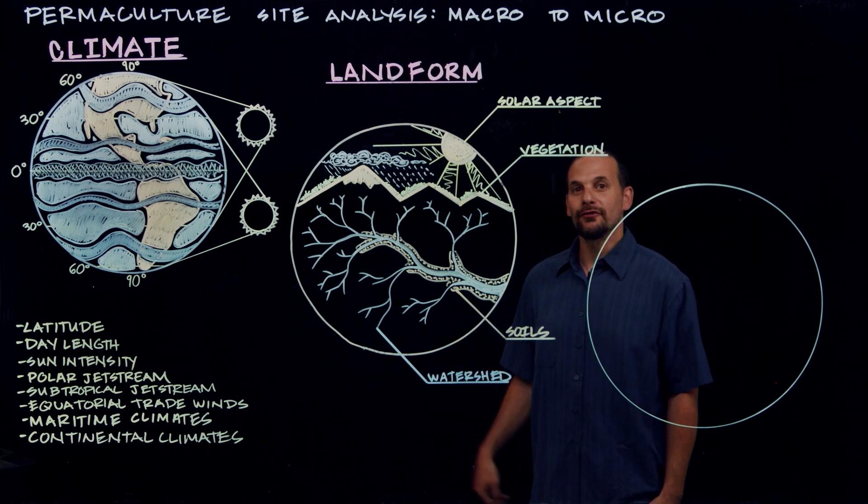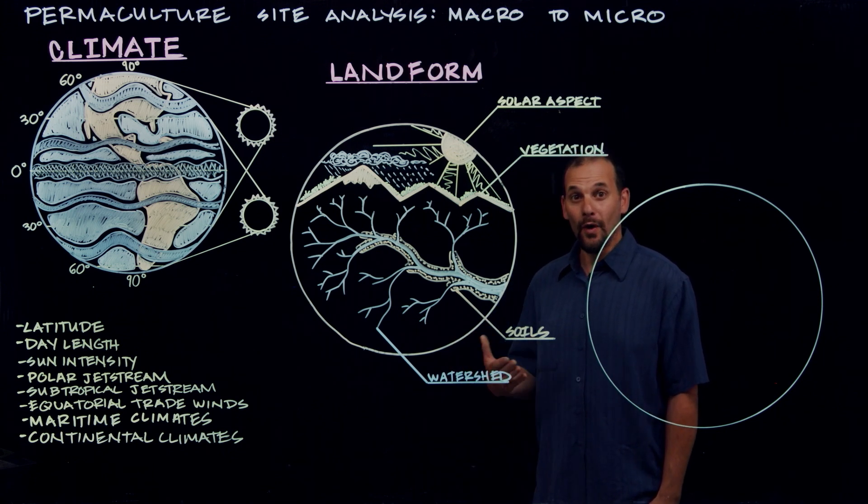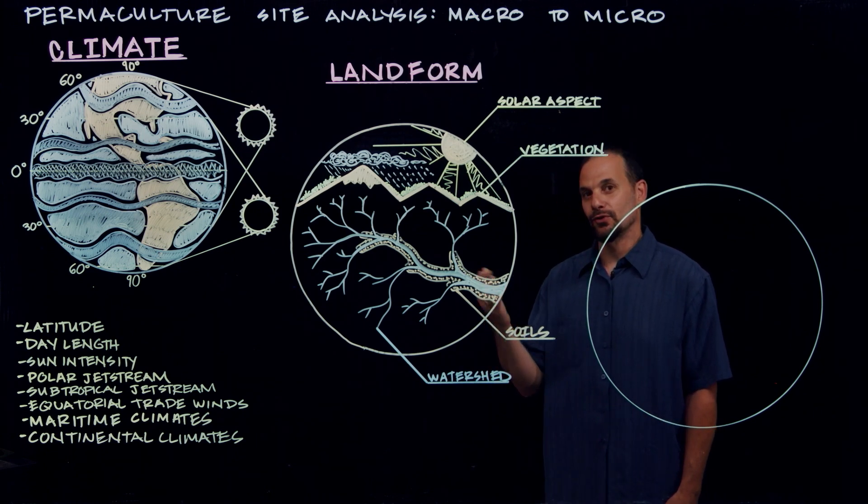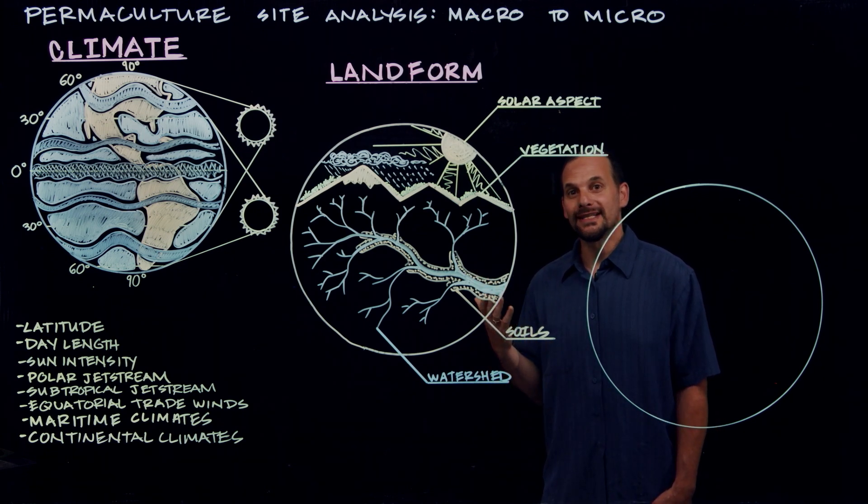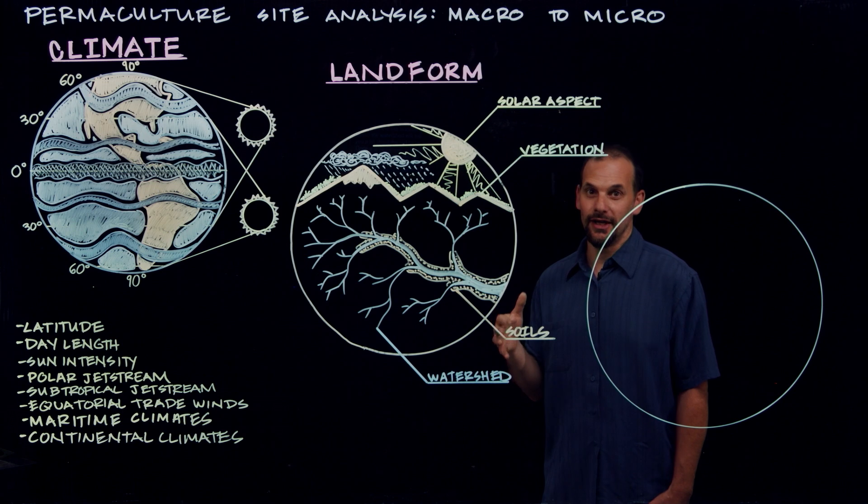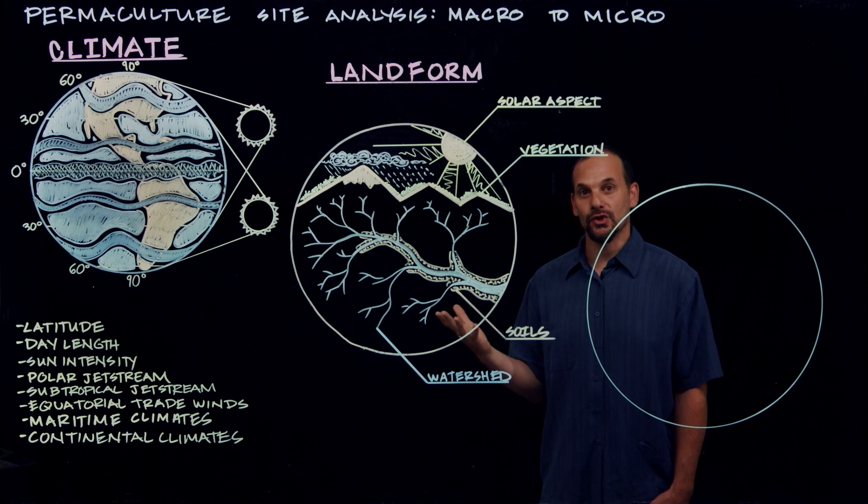Water flow has a lot of influence on the soil types, and where the site is located within the watershed will tell you a lot about the soil types. Once you've examined the site at the watershed level, it's then time to zoom in again and look at the site within its actual site boundaries.